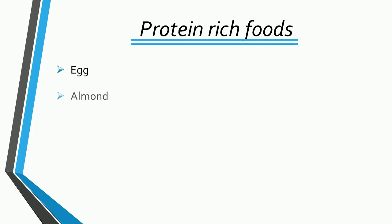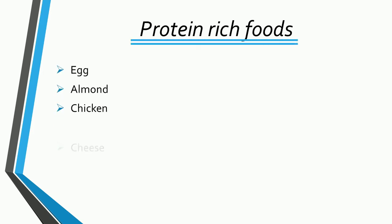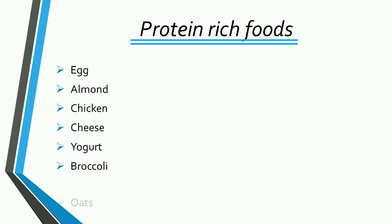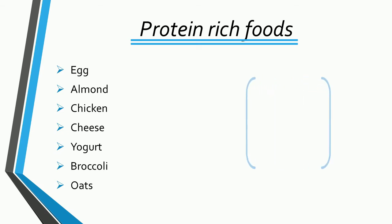Egg, almond, chicken, cheese, yogurt, broccoli, and oats are foods rich in protein.